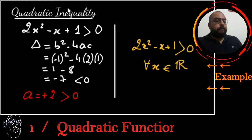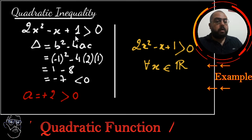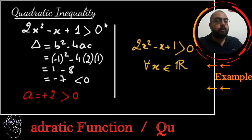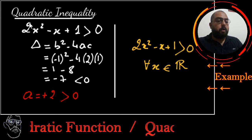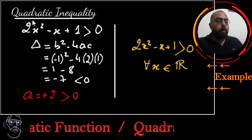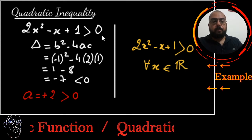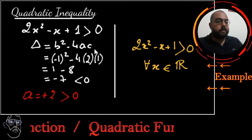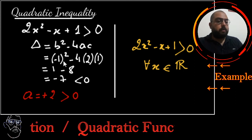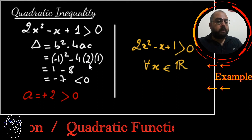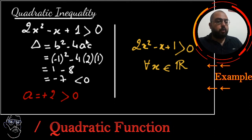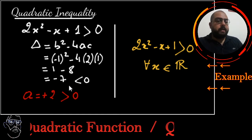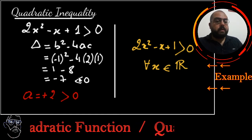The first example: 2x² - x + 1 > 0. We're looking for the values for which this polynomial will be positive. The first thing you should go through is delta. Delta is b² - 4ac. It's (-1)² - 4 × 2 × 1, so it's 1 - 8. 1 - 8 is negative. Delta is negative.